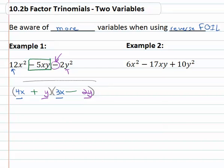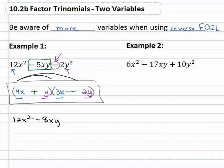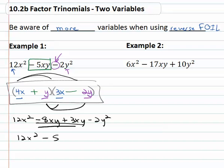Our final answer is (4x + y)(3x − 2y). We can always check our factoring by FOILing out the solution. 4x times 3x is 12x², 4x times negative 2y is negative 8xy, and y times negative 2y is negative 2y squared. Those middle terms give us 12x² minus 5xy minus 2y², which matches the original problem. This tells us that we did in fact factor it correctly.